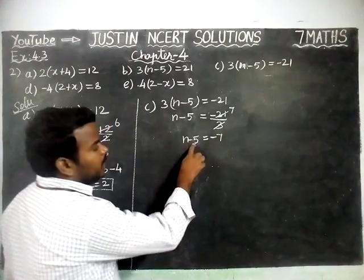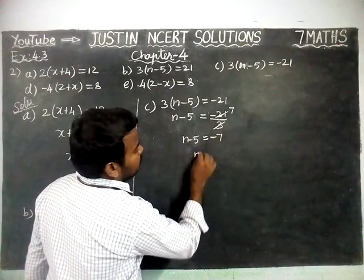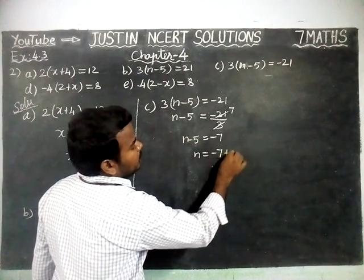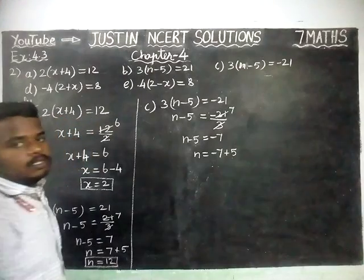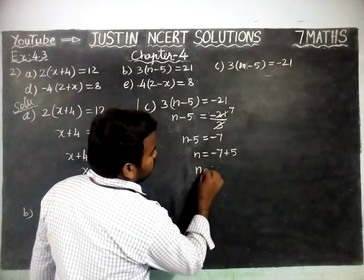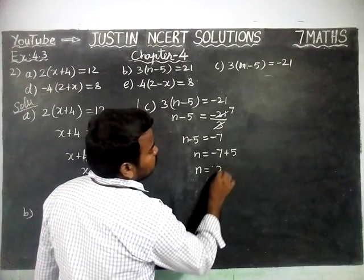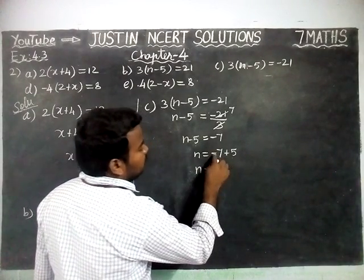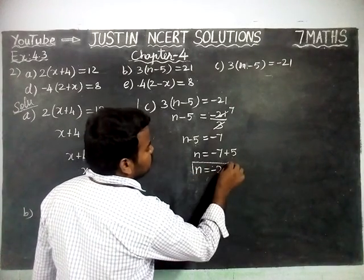Now, this minus 5 I am going to take it to the right hand side. So n is equal to -7, and minus 5 is going to the right hand side as plus 5. Signs are different, so we have to find the difference. The difference is 2, and here the greatest number is 7. In front of the greatest number, minus is there. So n is equal to -2.